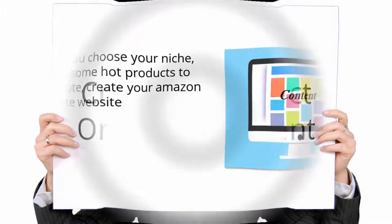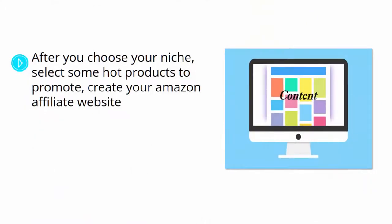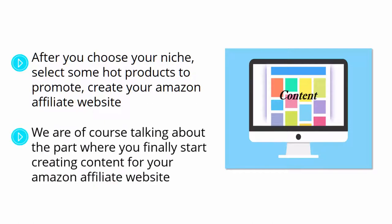Creating Product-Oriented Content. After you choose your niche, select some hot products to promote, create your Amazon Affiliate website, and sign up for the Amazon Associates program, the time comes to start doing the hardest part — the one that will determine if you make it or break it as an Amazon Affiliate. We are, of course, talking about the part where you finally start creating content for your Amazon Affiliate website, because content is what will attract buyers to your Amazon Affiliate websites.